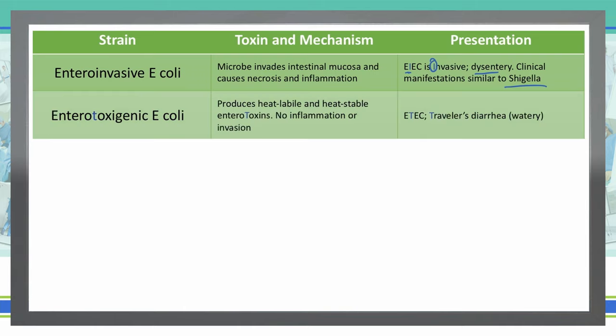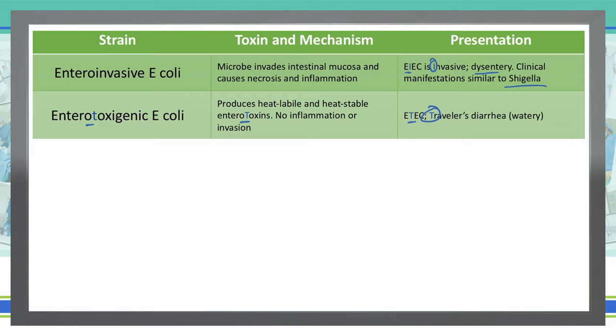Entero-toxogenic E. coli, or ETEC, produces a heat-labile toxin that is heat stable and is an enterotoxin. The 'T' is important here — no inflammation or invasion is associated with it. ETEC causes traveler's diarrhea, which is a watery diarrhea. That's typically all you see with entero-toxogenic E. coli.